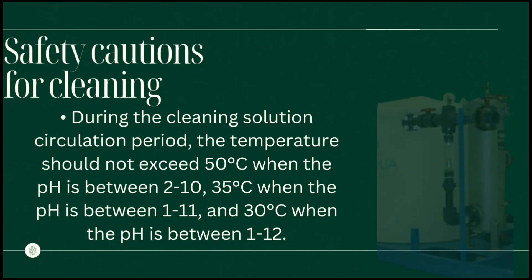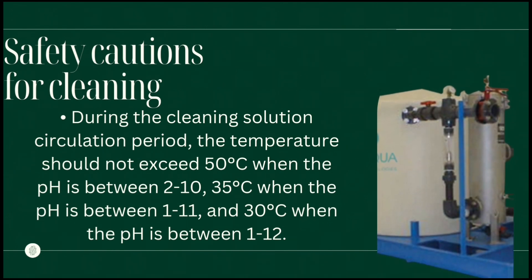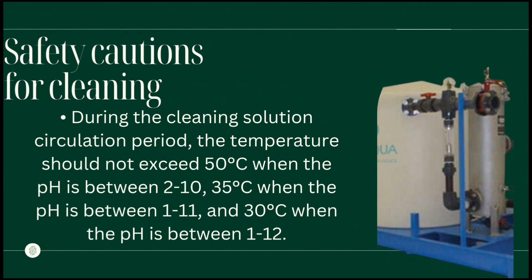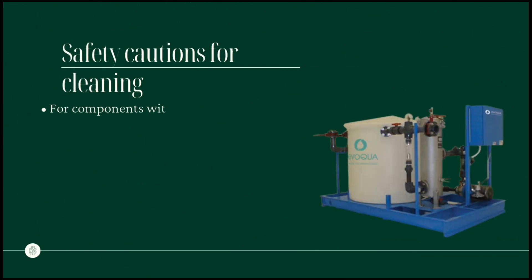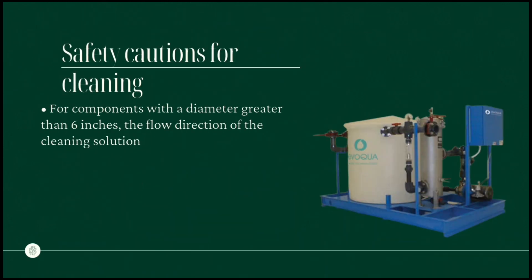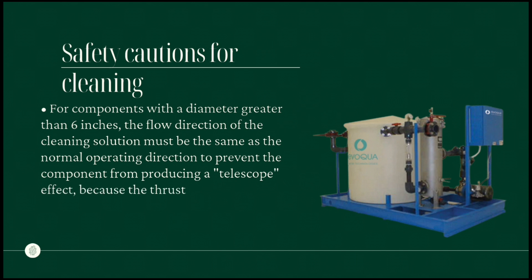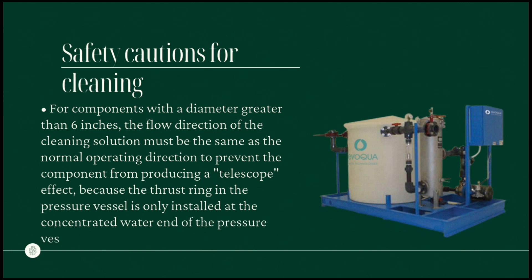During the cleaning solution circulation period, the temperature should not exceed 50°C when the pH is between 2 and 10, 35°C when the pH is between 1 and 11, and 30°C when the pH is between 1 and 12. For components with a diameter greater than 6 inches, the flow direction of the cleaning solution must be the same as the normal operating direction to prevent the telescope effect, because the thrust ring in the pressure vessel is only installed at the concentrated water end of the pressure vessel.